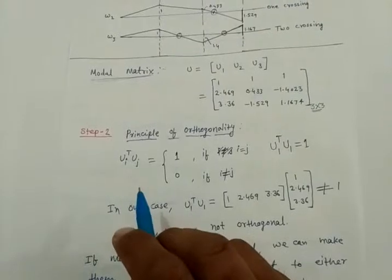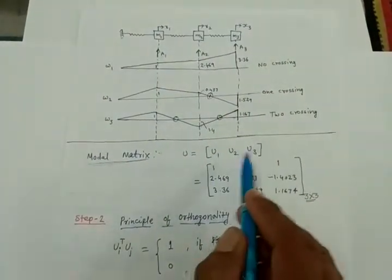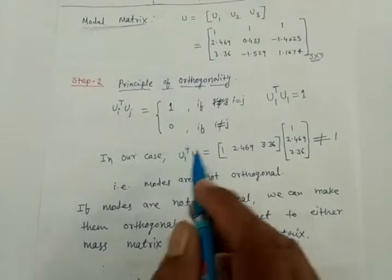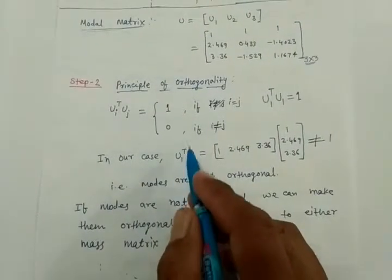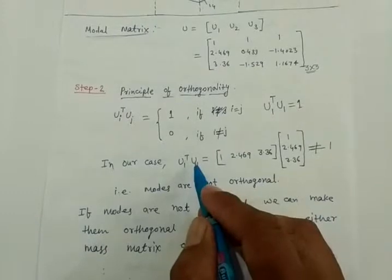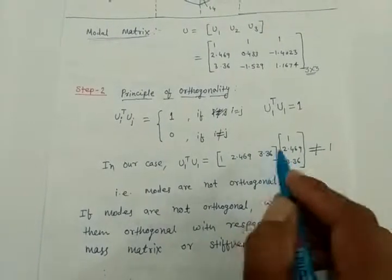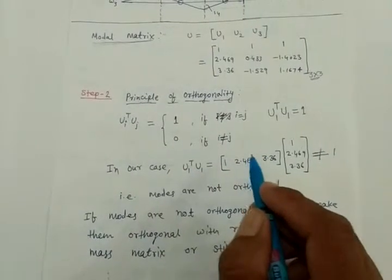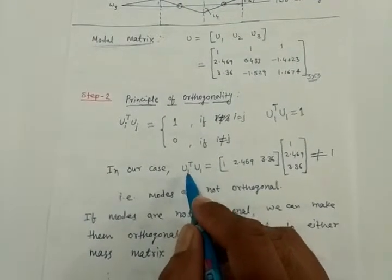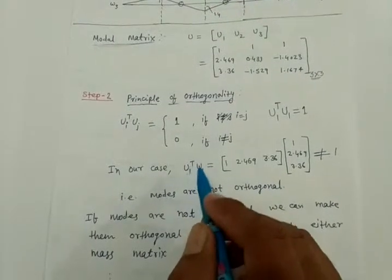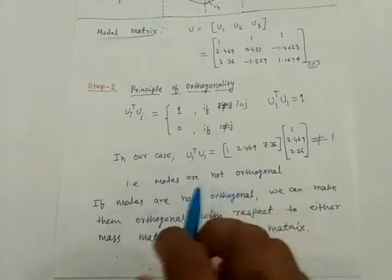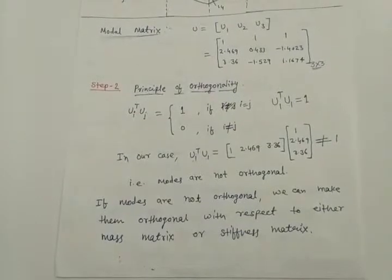Let us check whether our modes are orthogonal or not. In our numerical case I take i equal to 1 and calculate u1 transpose times u1. Here u1 transpose is [1, 2.469, 3.36] and u1 is the same vector. You will see that this result is not equal to one, so I can conclude that the modes are not orthogonal.